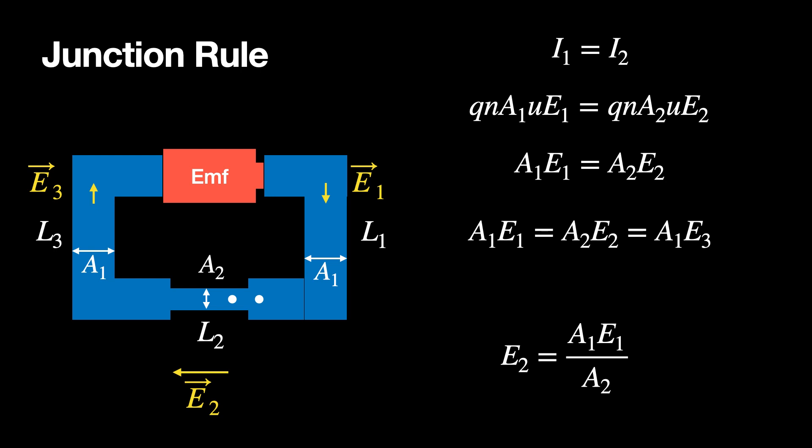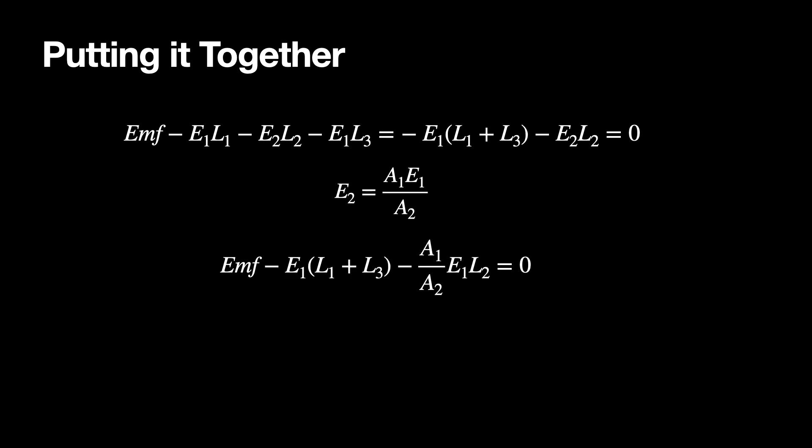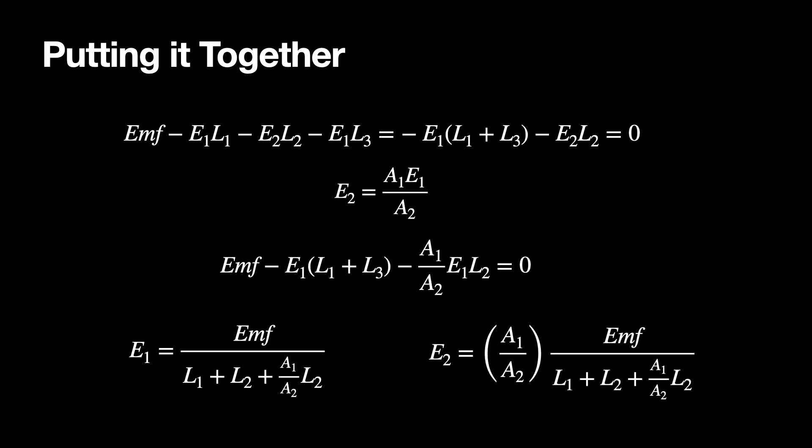Putting the junction rule together with the loop rule: starting with EMF minus E1L1 minus E2L2 minus E3L3 equals zero, and noting L1 and L3 have the same area so the same electric field, I substitute E1 for E3 and substitute in the expression for E2. This gives an expression I can solve for E1. If area 2 is very small compared to area 1, then E1 is also very small and can be ignored in many cases. This demonstrates using the loop rule with electric fields and electric potential.